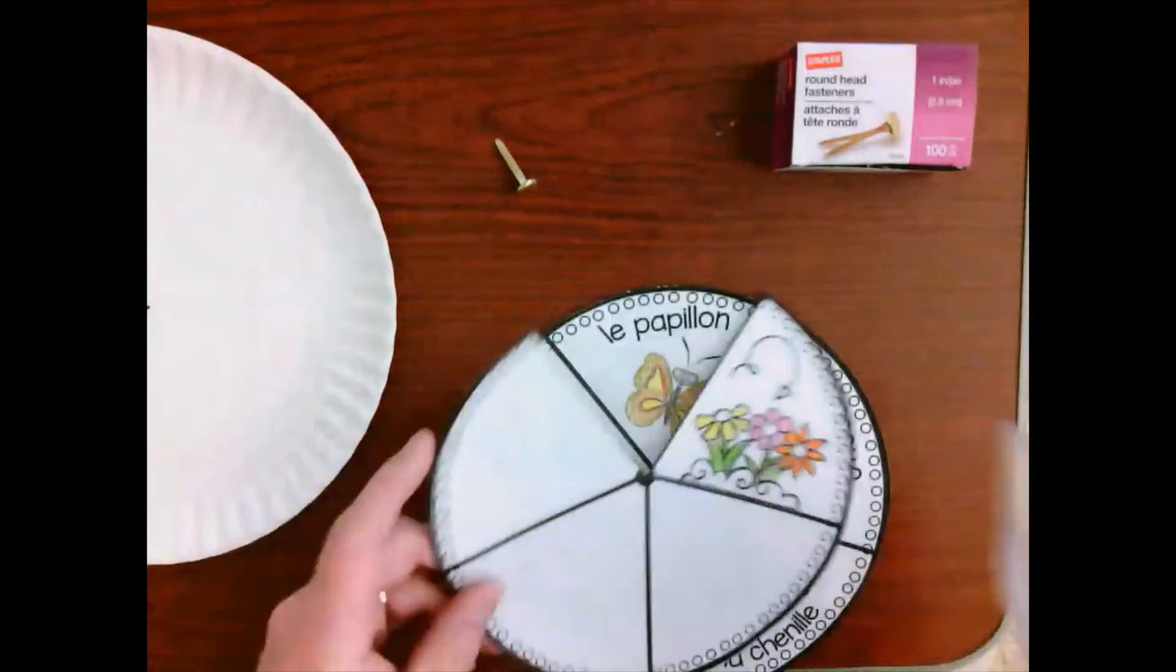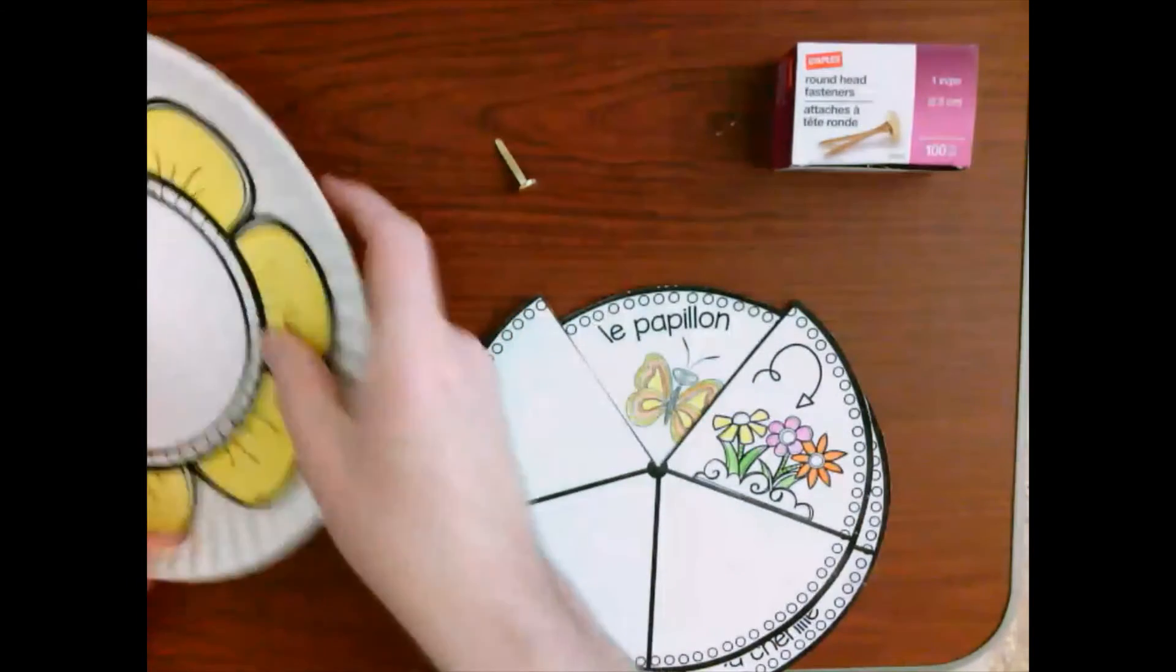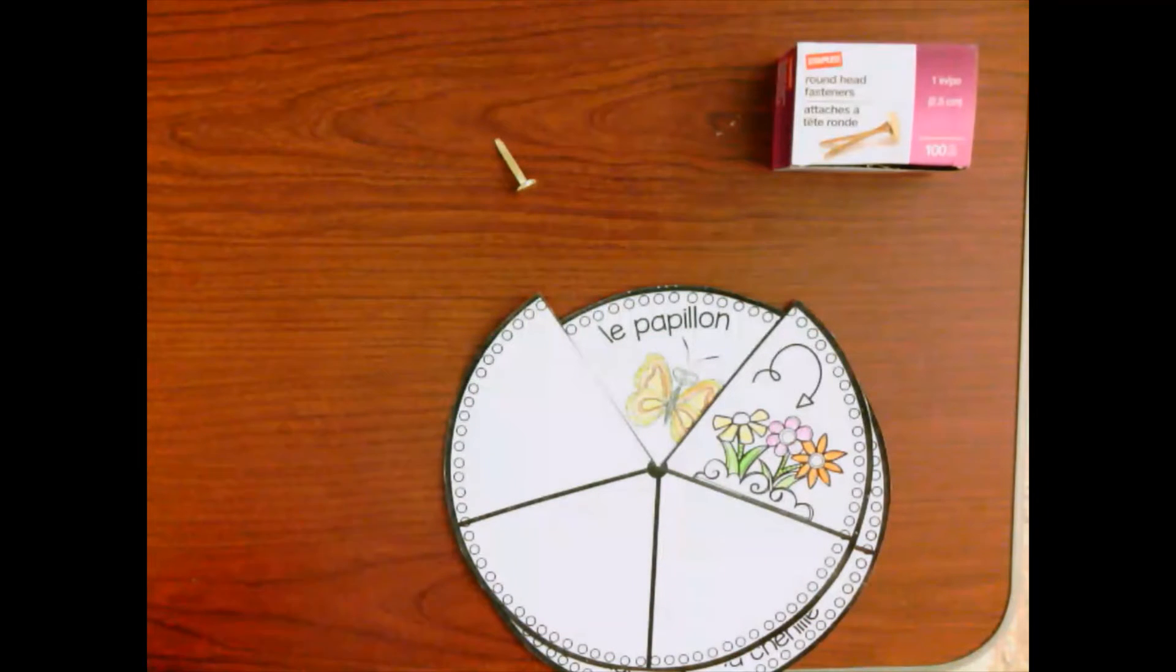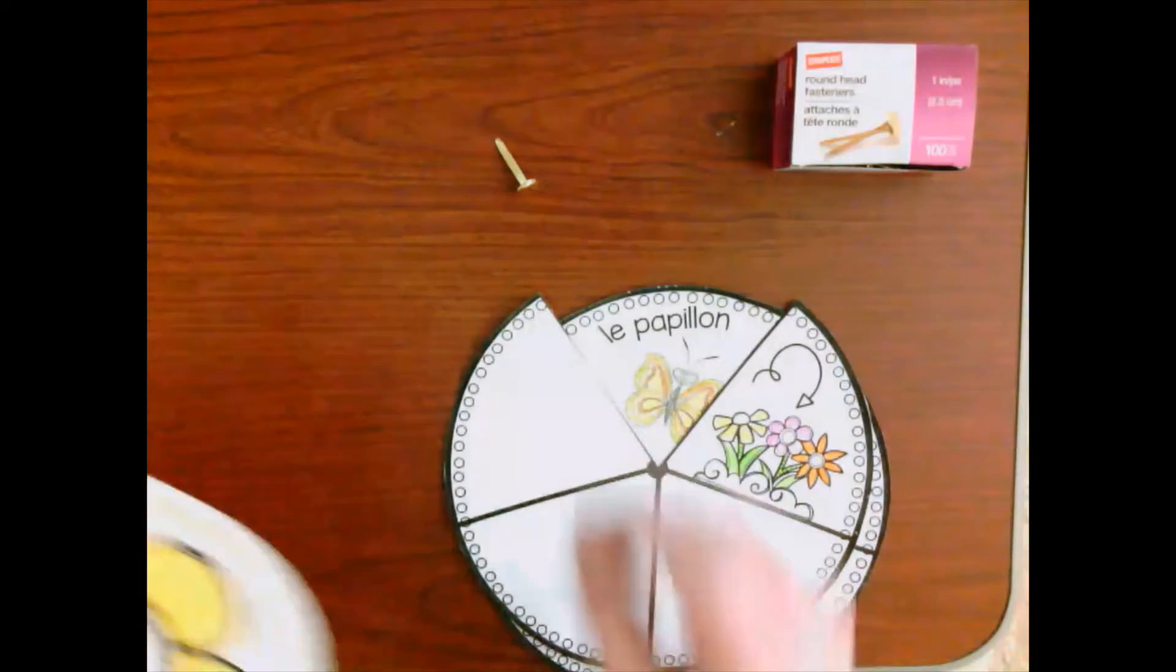Now, what I did, I put this, the flowery part, the back part, on my plate, and then, I've already poked a hole, I should just see if it would work, so I'm just going to line that up.